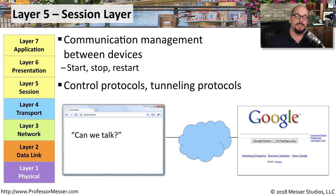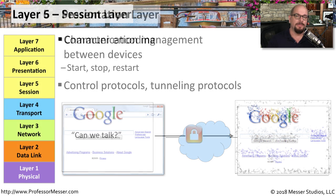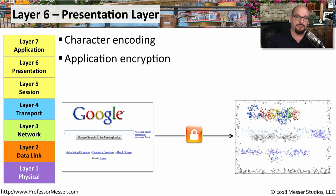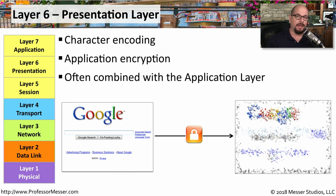Once you get into OSI layers five, six, and seven, you're dealing with the way that applications communicate across the network. Many applications handle their own process of starting and ending a communication, and all of this occurs at layer five, or the session layer. This is also the layer where you'll see certain control protocols communicate between application endpoints, or if there's any tunneling, it will occur at layer five. The layer just before the application is layer six, or the presentation layer. If there's any character encoding, it will occur at this layer. And if any data needs to be encrypted or decrypted, it usually occurs at layer six. Many application protocols share both layer six and layer seven simultaneously.